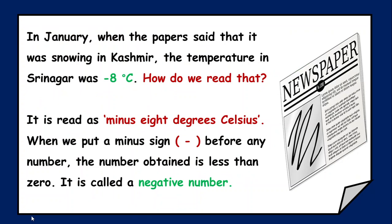Many times in the newspaper we see temperature readings. In summer, the temperature is high; in winter, it is less. For example, in January there was heavy snowfall in Kashmir and the temperature in Srinagar was minus eight degrees Celsius. It is read as minus eight degrees Celsius. Celsius is the unit of temperature, just as we use meters for measuring length.